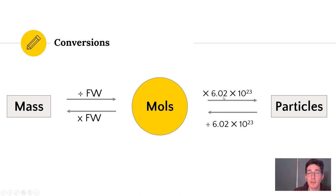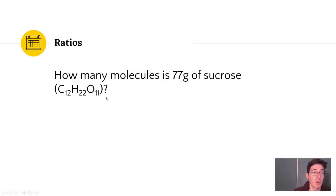My conversion factors are shown. There are 6.02 times 10 to the 23rd particles per mole. Doesn't matter what it is - molecules, atoms, cars, whatever. And then our mass to mole ratio is the formula weight of that compound. So in our problem here, how many molecules, that's what I want to know, are in this mass of sucrose? And here's the formula for sucrose. So we're going to go from a mass to moles to molecules.